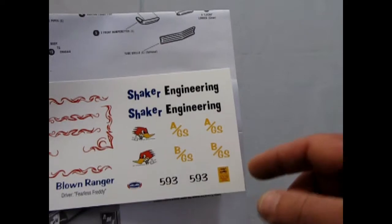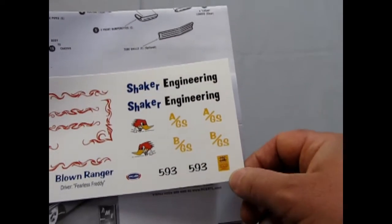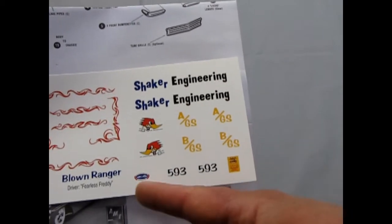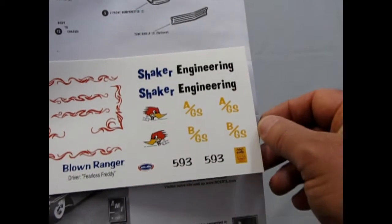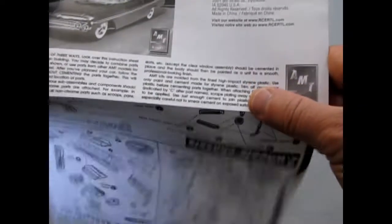A gasser and B gasser class. 593 cubic inches, Shaker Engineering, and some a little poster and a National Hot Rod Association decal for your car. So just move those over there now and concentrate on our instructions.